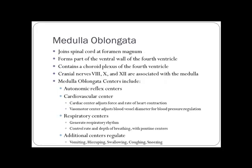The medulla oblongata joins the spinal cord at the foramen magnum, connecting the brainstem to the spinal cord. Cranial nerves VIII, X, and XII arise here. The medulla contains autonomic reflex centers including the cardiovascular center — which controls vasomotor activity (blood vessel dilation and constriction) and heart rate — and the respiratory center, which controls rate and depth of breathing. Other reflexes controlled by the medulla include vomiting, hiccuping, swallowing, coughing, and sneezing.